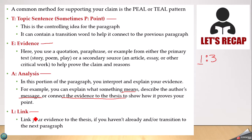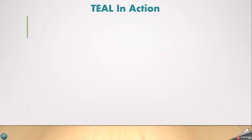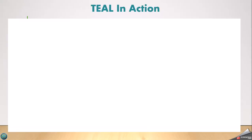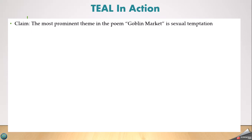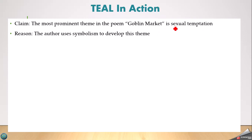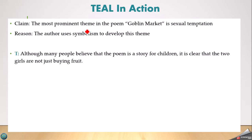Every body paragraph could look like this. Let's take a look at some examples. First I'm going to show you a really good example, and then four where there was a problem, and then the revision — kind of like we did with the introductions. The most prominent theme in Goblin Market is sexual temptation. That was the person's claim. One of their reasons was symbolism — that symbolism developed the theme. Here is one of the paragraphs that goes along with that reason.